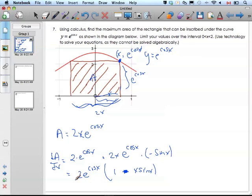If this is going to be a maximum, I know this derivative has to be 0. So I can have two equations here: 2e to the cosine of x equals 0, or 1 minus x sine x equals 0.